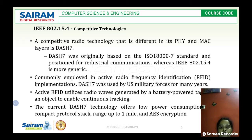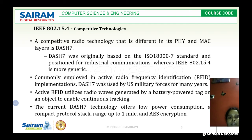IEEE 802.15.4 uses RFID — radio frequency identification — for all its implementations: connectivity, coordination, and accessibility. DASH-7, on the other hand, is used for military applications rather than normal generic applications. The RFID used by IEEE 802.15.4 is battery-powered and uses that battery power to track objects.